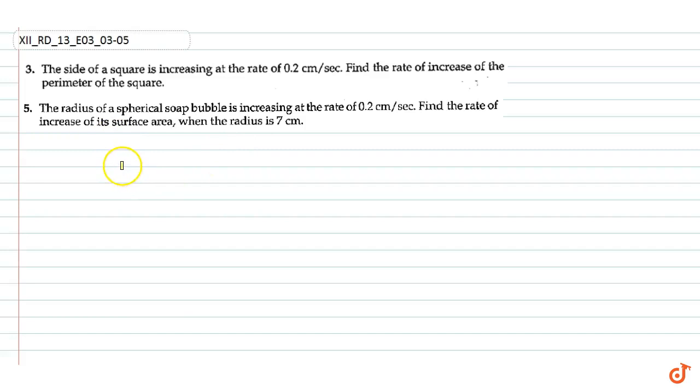In this video we are going to solve the third and fifth questions. In the third question, the side of a square is increasing at the rate of 0.2 centimeters per second, so we have to find the rate of increase of the perimeter of the square.